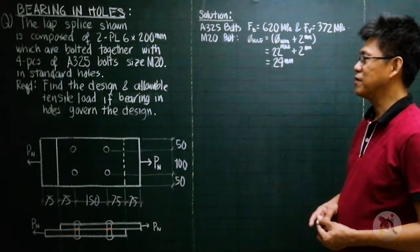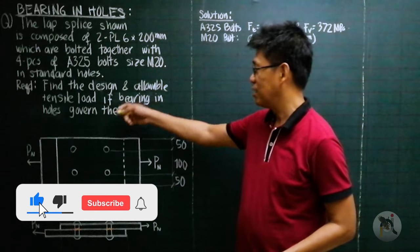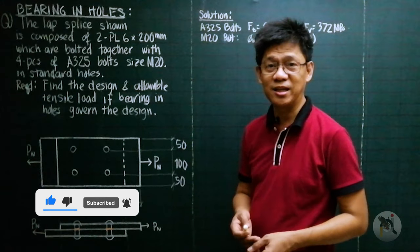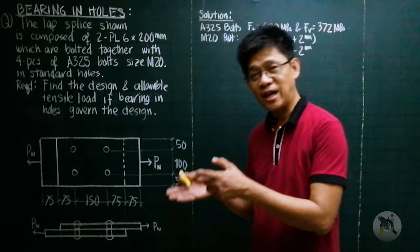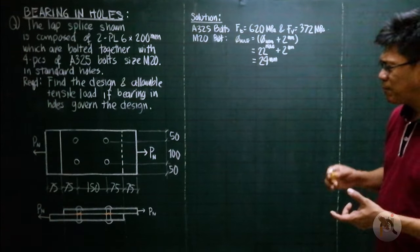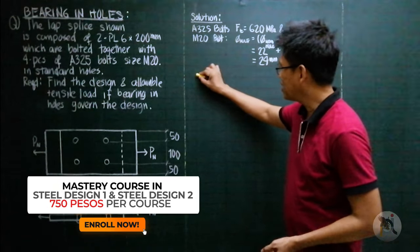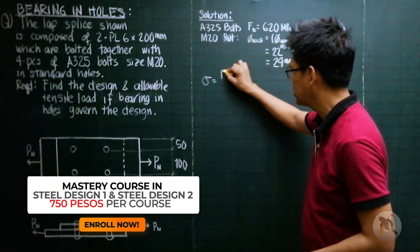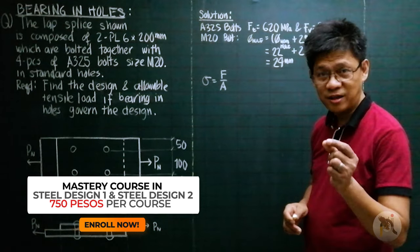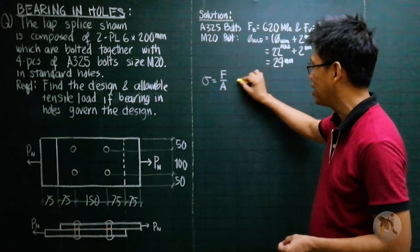Now, what about if the governing factor in the design is the bearing in holes? How do we handle this, applying the latest AISC code or the NSCP 2015? For bearing, let me explain the concept. We know that stress is equal to force per unit area.